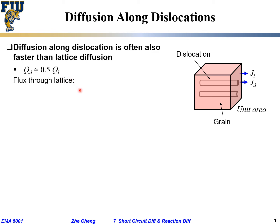Similarly to what we have done before, the flux through lattice would be JL for lattice equals DL times the concentration gradient term. We are still assuming the concentration gradient across the grain.